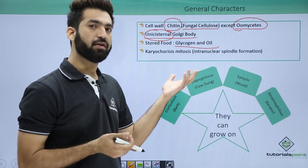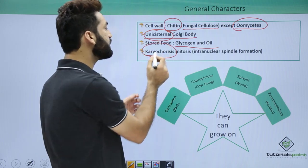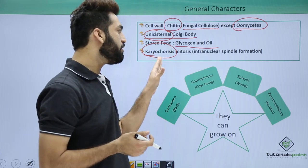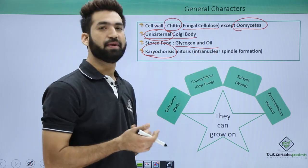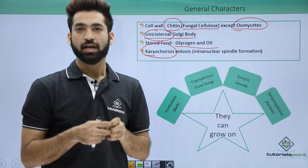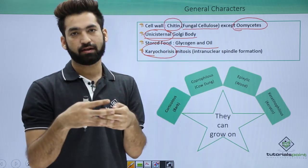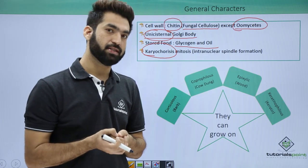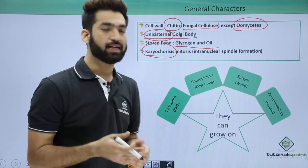The stored food of fungi is glycogen and oil. One very important event that occurs in fungi is karyochorosis — also called intranuclear mitosis. During karyochorosis, the spindle fibers form inside the nucleus, and the nuclear membrane never dissolves. This is different from typical mitosis where the nuclear membrane breaks down.